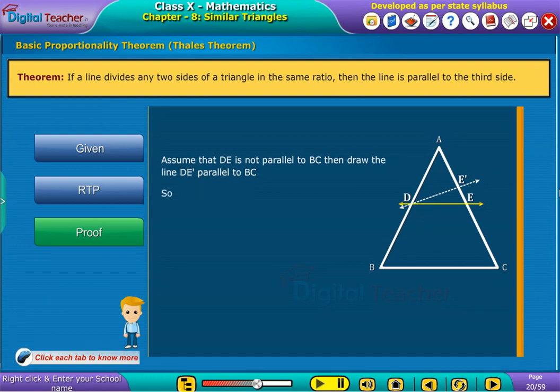So by basic proportionality theorem, AD by DB is equal to AE' by E'C. As AD by DB is equal to AE' by E'C,